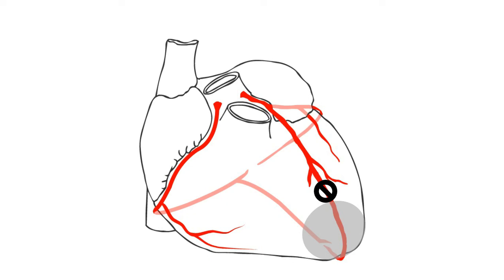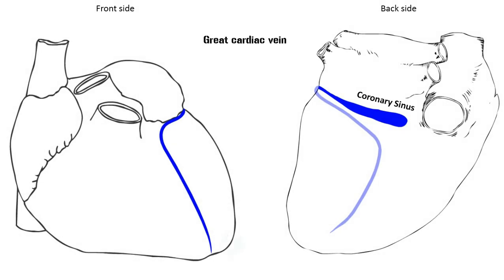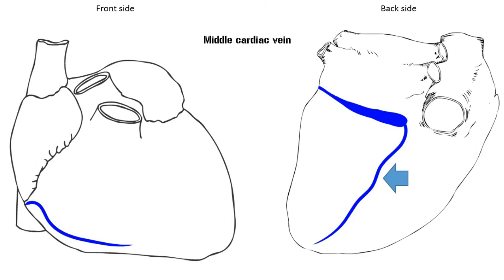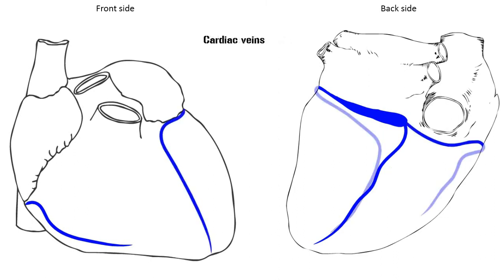Now let us move to the cardiac veins. The great cardiac vein goes up along the anterior interventricular groove and then courses along the coronary sulcus to finally drain into the coronary sinus. The coronary sinus is a large cardiac vein which drains into the right atrium. The great cardiac vein drains the territory supplied by the left coronary artery. The small cardiac vein arises from the tissue along the right margin of the heart and courses along the right coronary sulcus to drain into the coronary sinus. The middle cardiac vein courses up along the posterior interventricular groove and then drains into the coronary sinus. In summary, the small cardiac vein and middle cardiac vein drain the territory supplied by the right coronary artery.